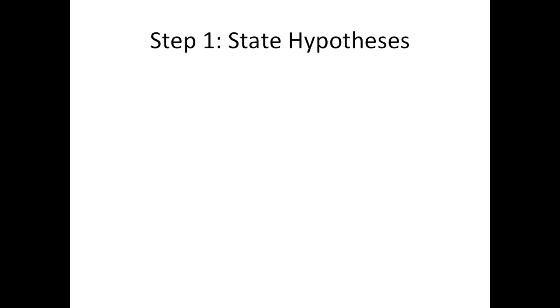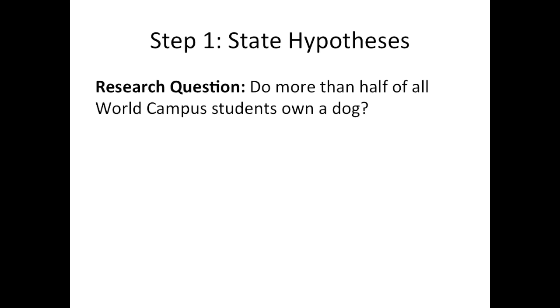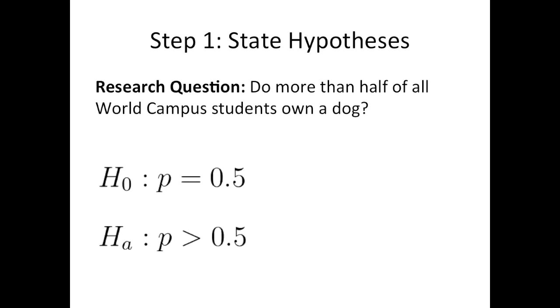Step 1: state hypotheses. Recall our research question: do more than half of all World Campus students own a dog? I like to start with the alternative hypothesis. The alternative hypothesis is going to be that the population proportion is greater than 0.5. This leaves our null hypothesis to be that the population proportion equals 0.5.